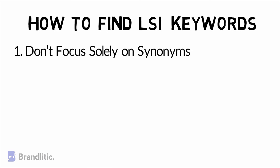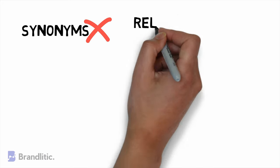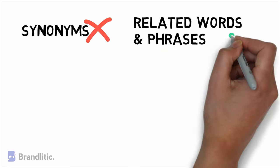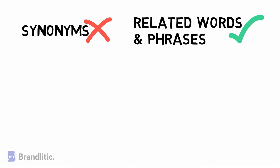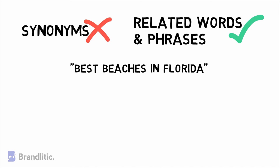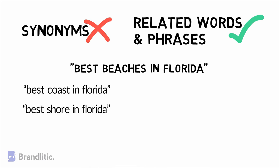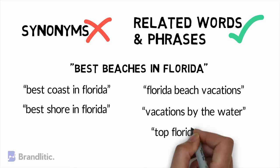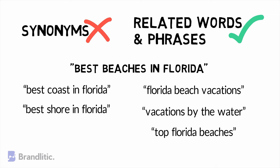Strategy 1: Don't focus solely on synonyms. As you learn how to find LSI keywords, keep in mind that you're not just looking for synonyms — you're also looking for related words and phrases. For example, if you were targeting 'best beaches in Florida,' you wouldn't simply focus on synonyms like 'best coast in Florida.' You would create a list of relevant keywords like 'Florida beach vacations,' 'vacations by water,' or 'top Florida beaches,' to reach a broader audience.